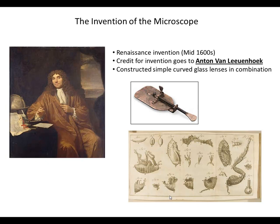Leeuwenhoek was by trade a merchant — he traded in fine oriental silks, carpets, and rugs, and he wanted to prove to his customers that he had the finest quality cloth. He started off by constructing simple curved glass lenses and using them as a magnifying glass, and found that when used in combination he could get even greater detail and magnification. Using this simple curved glass lens combination microscope, Leeuwenhoek was able to make fairly detailed drawings of organisms — for example, these are actual drawings he made of flea anatomy. Anton van Leeuwenhoek is truly the father of the microscope.